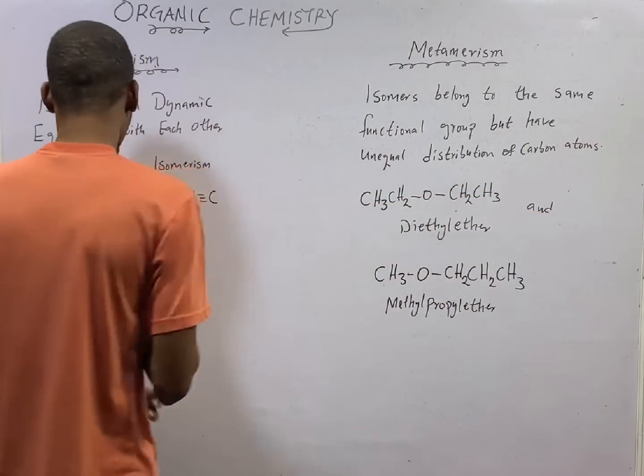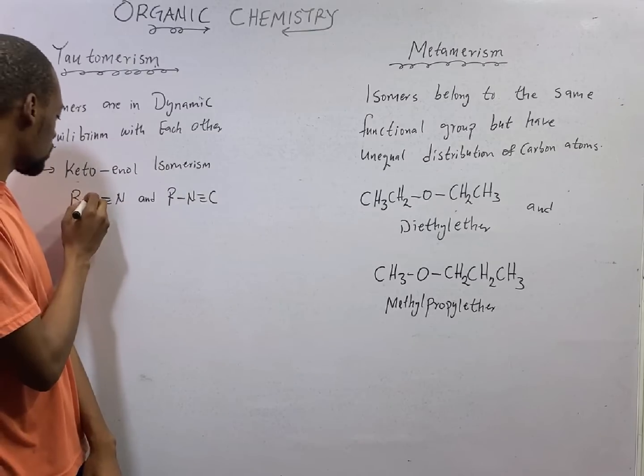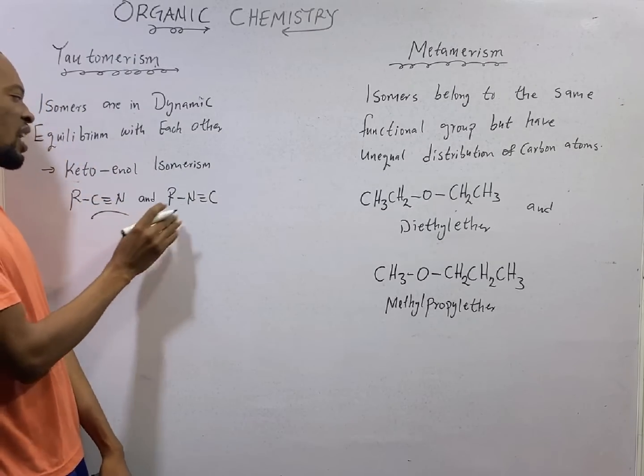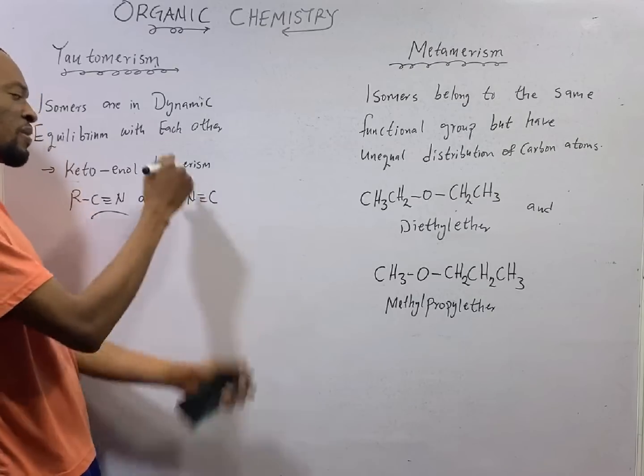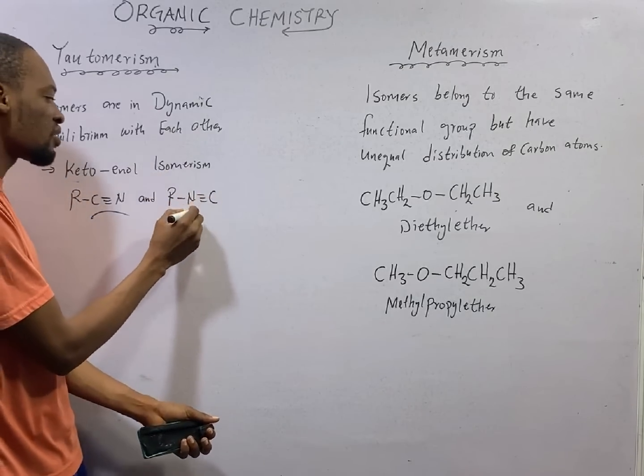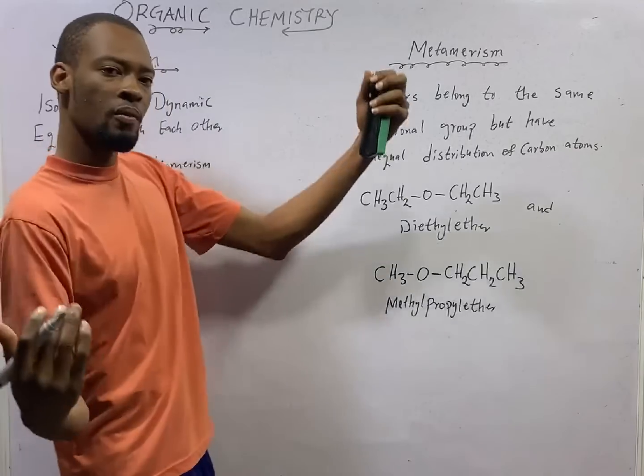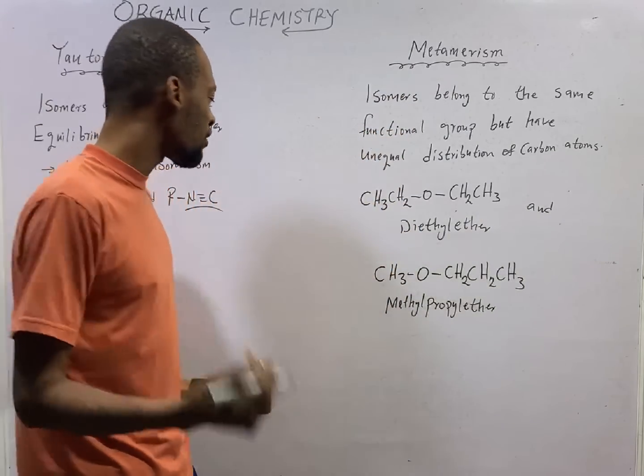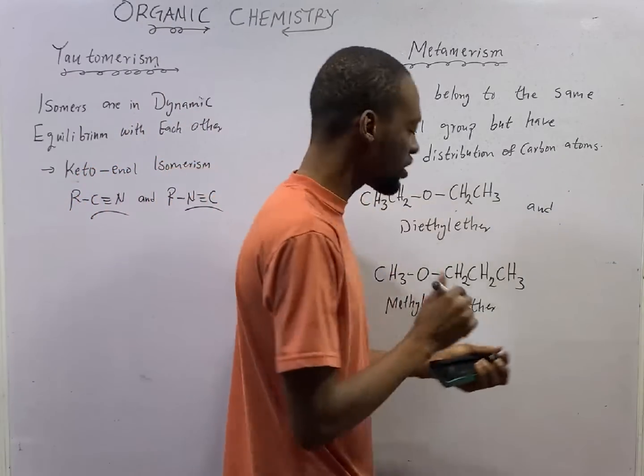As you can see here, this is arrow to C triple bond to N, and you see this other one, it has been reversed arrow to N triple bond to C. So they are balanced. Forward and reverse are at the same rate. That is Tautomerism for you.